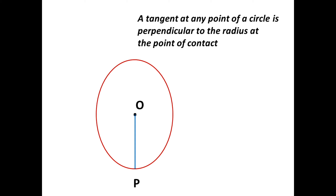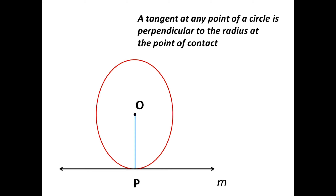From this we can conclude that a tangent at any point of a circle is perpendicular to the radius at the point of contact. In the figure, there is a circle with center O, P is the point on the circle, and line M is a tangent to the circle passing through point P. So the radius OP is perpendicular to line M. This is the tangent theorem.